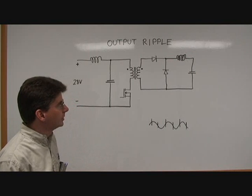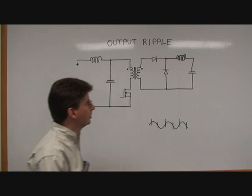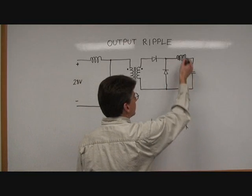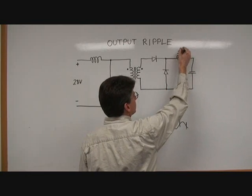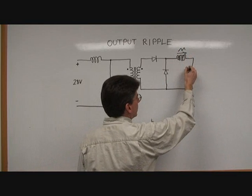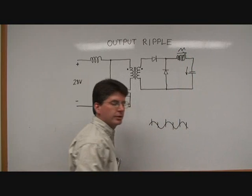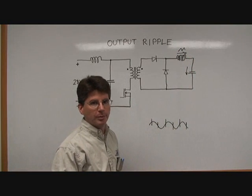This topology will create output ripple in its output capacitor. The current in this inductor is a triangle wave current and that current will flow in this capacitor and create some voltage ripple.